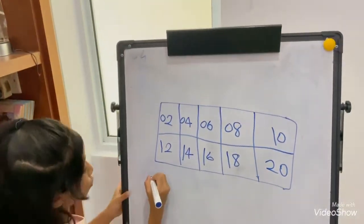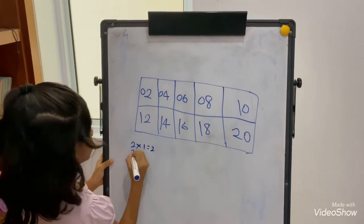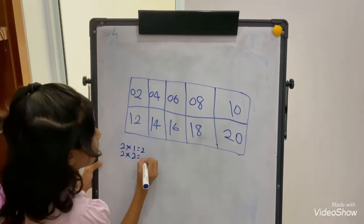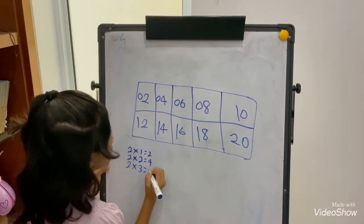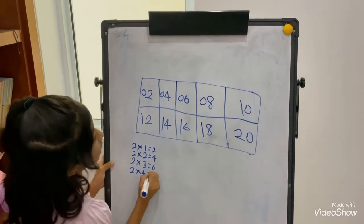So, 2 times 1 equals 2. 2 times 2 equals 4. 2 times 3 equals 6. 2 times 4 equals 8.